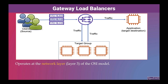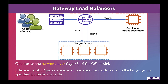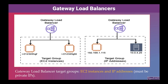Gateway Load Balancers operate at the network layer of the OSI model. It listens for all IP packets across all ports and forwards traffic to the target group specified in the listener rule. Gateway Load Balancer target groups are EC2 instances and IP addresses. IP addresses must be private.